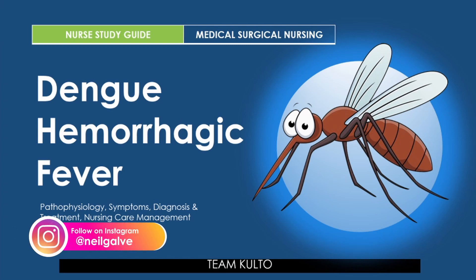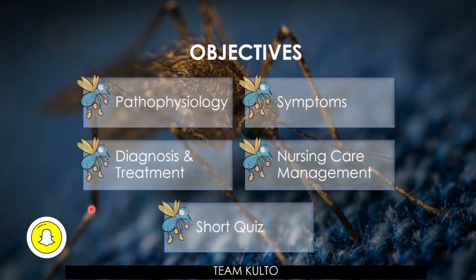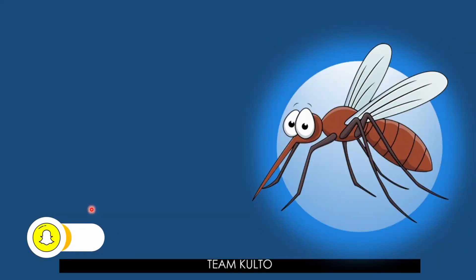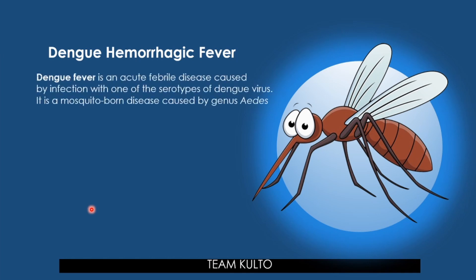I encourage you to check the description box for helpful reference links. Our objectives today: we'll discuss pathophysiology, symptoms, diagnosis, treatment, and nursing care management, followed by a short quiz. Dengue fever is an acute febrile disease caused by infection with one of the serotypes of dengue virus — some patients progress to dengue hemorrhagic fever, a severe and sometimes fatal form.